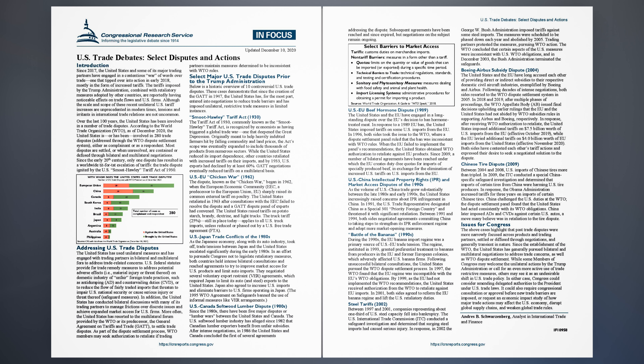Issues for Congress: The above cases highlight that past trade disputes were more narrowly focused across products and trading partners, settled or diffused through negotiations, and generally transient in nature. Since the establishment of the WTO, the United States has generally pursued bilateral and multilateral negotiations to address trade concerns, as well as WTO dispute settlement. While some members of Congress may welcome the unilateral actions by the Trump administration or call for an even more active use of trade-restrictive measures, others may see it as an undesirable shift in U.S. trade policy. In either case, Congress could consider amending delegated authorities to the president under U.S. trade laws, require congressional consultation or approval before new trade barriers are imposed, or request an economic impact study of how major trade actions may affect the U.S. economy, disrupt global supply chains, and weaken global trade rules.